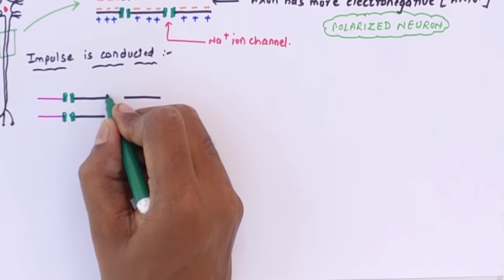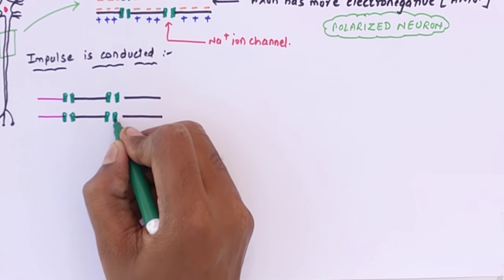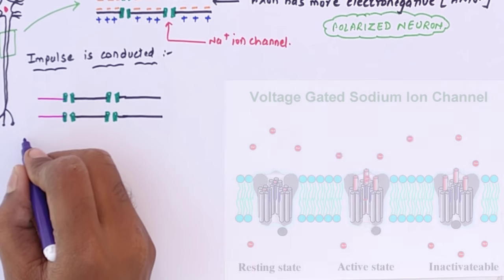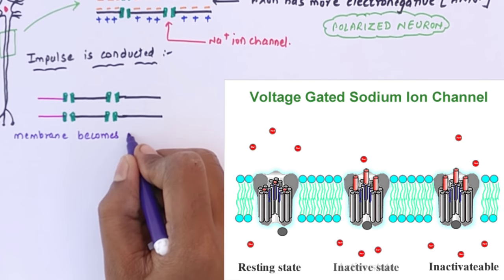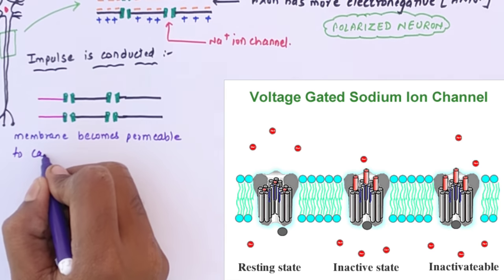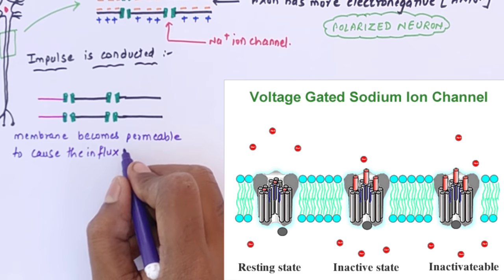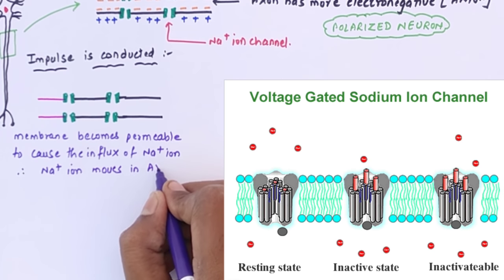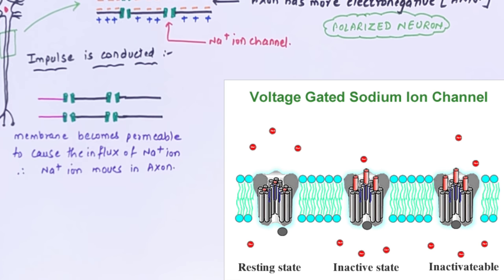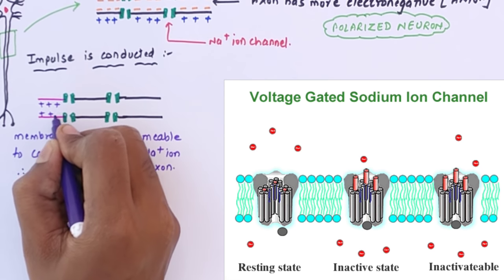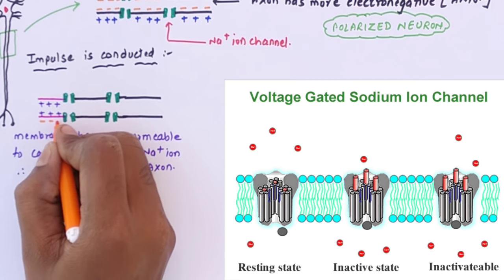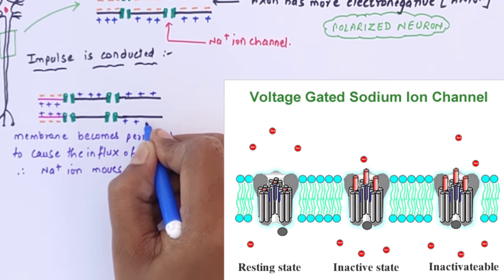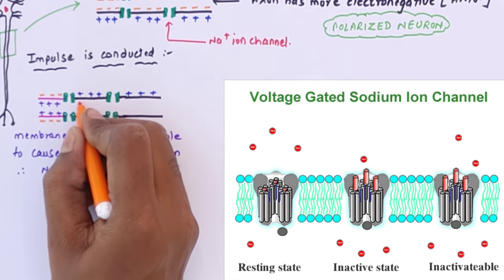The pink-colored area of the axon represents where the impulse has reached. When the impulse arrives, the sodium ion channels open up. All the Na+ ions from the ECF enter inside the axon through these sodium ion channels — this is called influx of Na+ into the axoplasm. As Na+ enters inside, the outside becomes negative and the inside becomes positive, since there is now more Na+ inside and less outside.